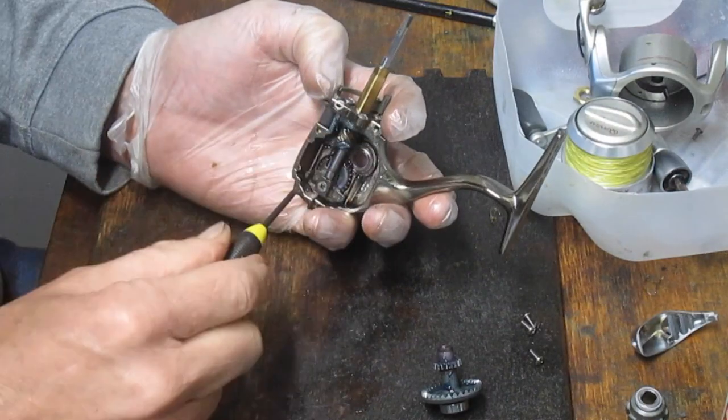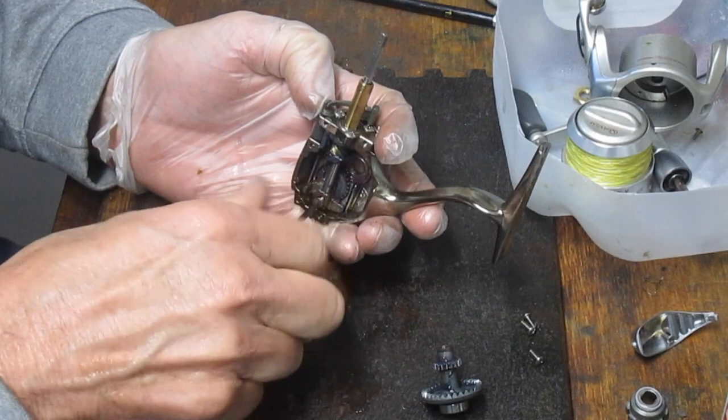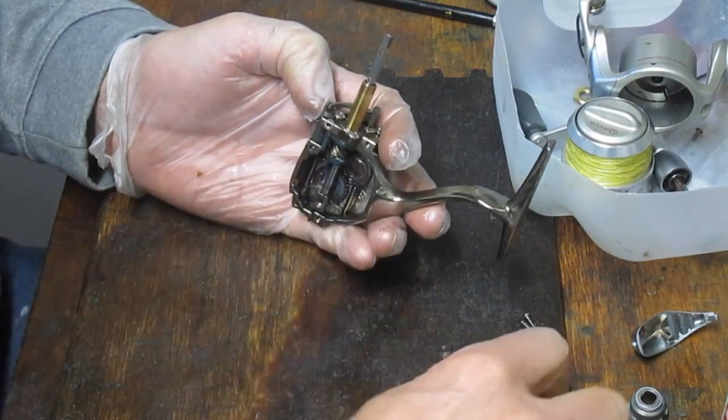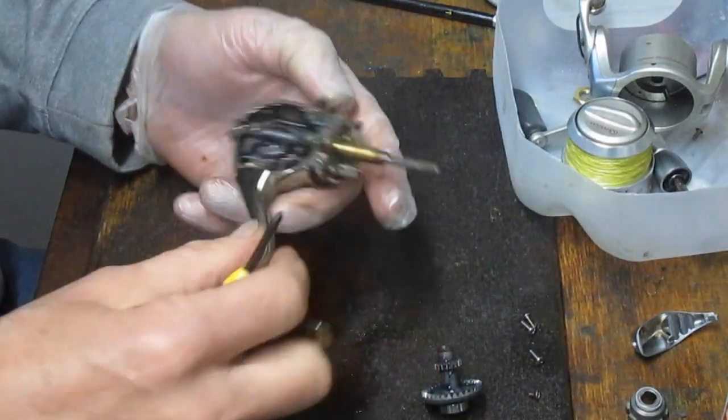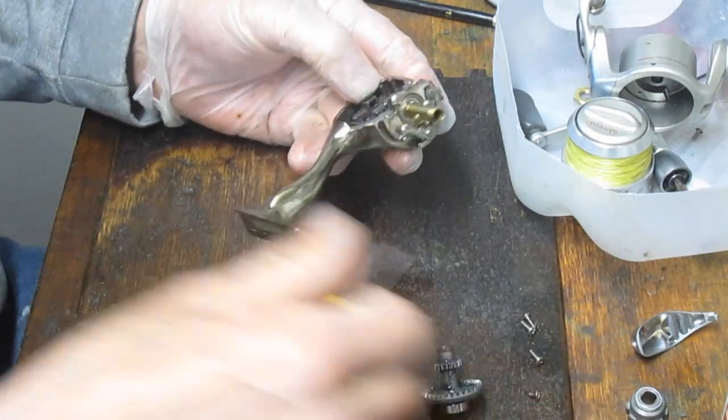Let's take the axle shaft out so we can get back here to the crosswind gear. Same idea. Small screw, small screwdriver. Now, if you hold the crosswind block now, you should be able to pull that axle shaft out, which we just did.